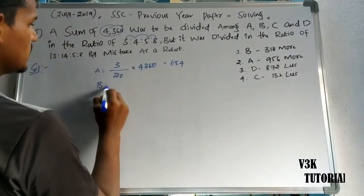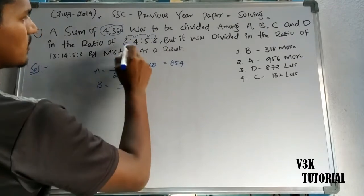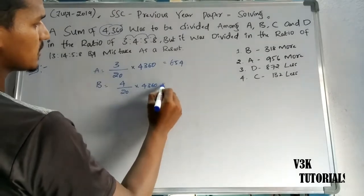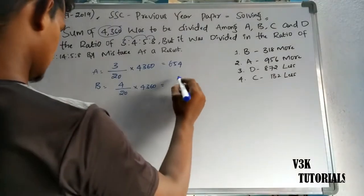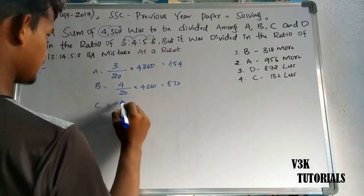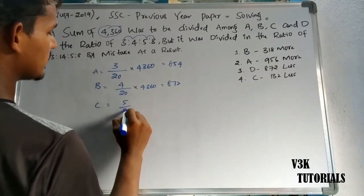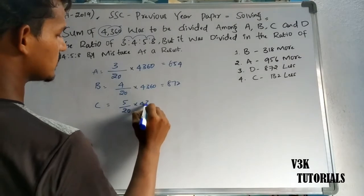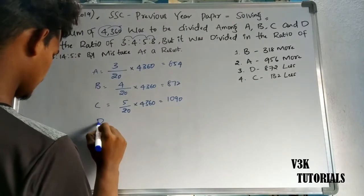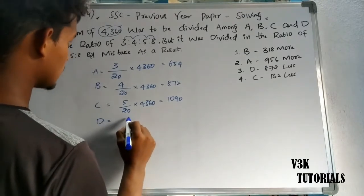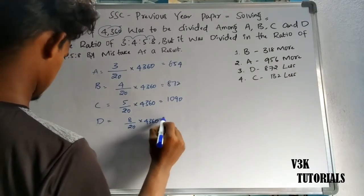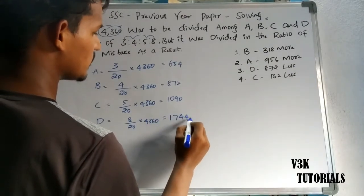Next, B's share was 4. So 4 by 20 into 4,360 equals 872. Next, C's share: 5 by 20 into 4,360 equals 1090. And D's share: 8 by 20 into 4,360 equals 1744.